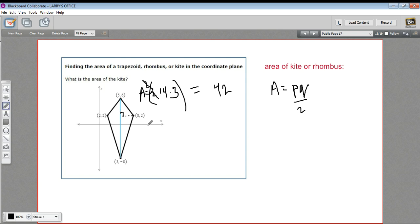The shortcut is to just multiply the diagonals and divide by two. Our diagonal here is six, and this one was 14. So you'd have six times 14 divided by two. You can see that's going to be exactly the same thing. That's 42.